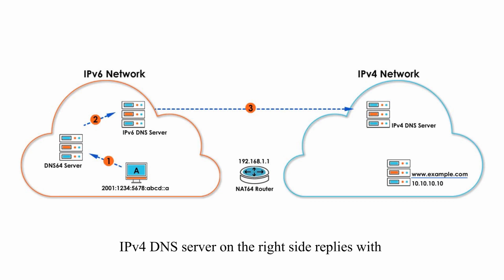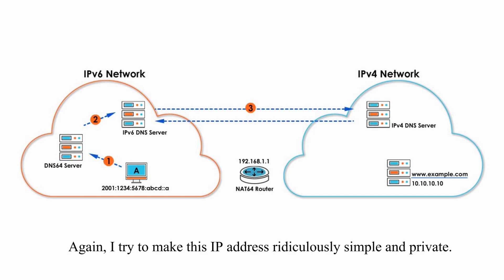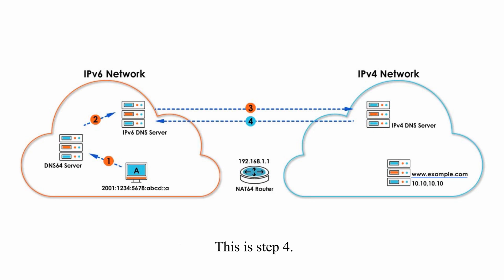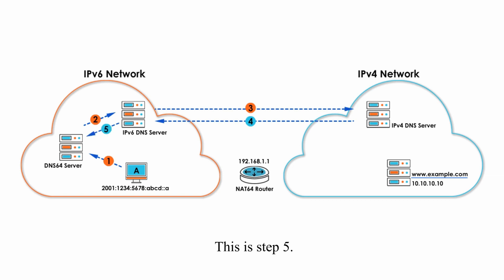Step 3: The IPv4 DNS server on the right side replies with the IPv4 address of example.com — for example, it is 10.10.10.10. Again, I try to make this IP address ridiculously simple and private. Step 4: This address is forwarded to the DNS64 server.